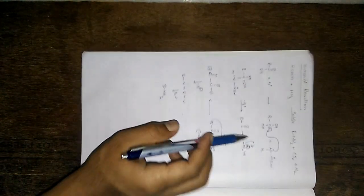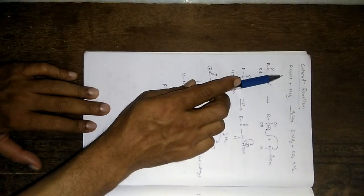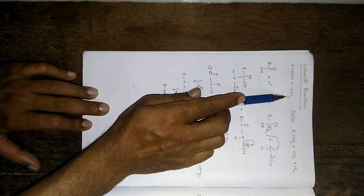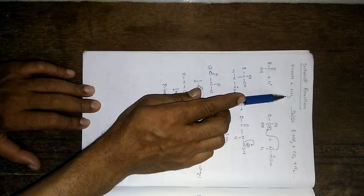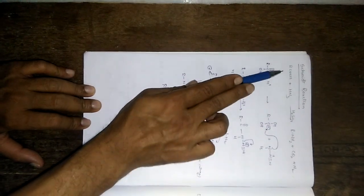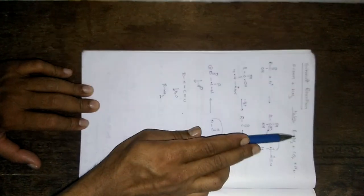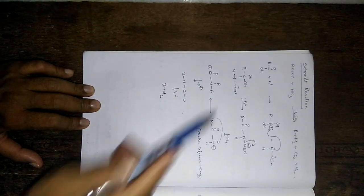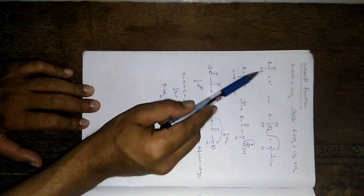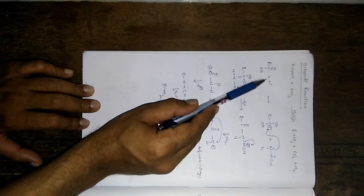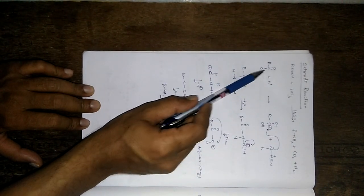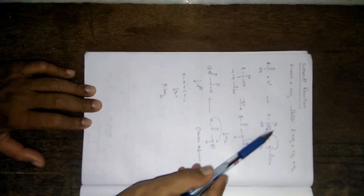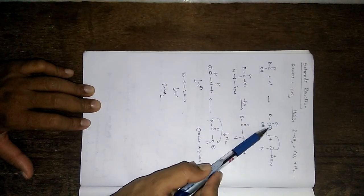The next reaction is the Schmidt reaction. Carboxylic acid plus HN3 (hydrazoic acid) in the presence of an acid gives amine plus CO2 plus N2. In this reaction, the carboxylic acid is protonated by the acid — the double bond oxygen picks up H plus — resulting in two OH groups and a positive charge on the carbon.